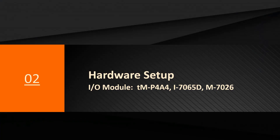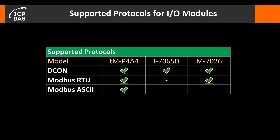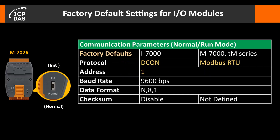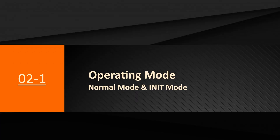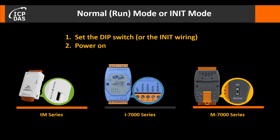In this case we use TMP4A4, I7065D, and M7026 IO modules. The TM series supports DCON, Modbus RTU, and Modbus ASCII. The I7000 series supports DCON only. The M7000 series supports DCON and Modbus RTU. The factory defaults in normal mode apply for I7000, M7000, and TM series modules. However, if the protocol setting is DCON, these four settings can only be changed in init mode.